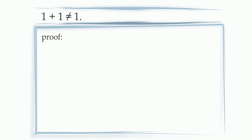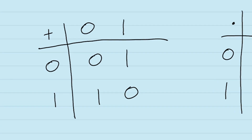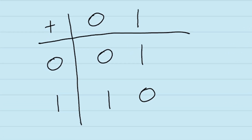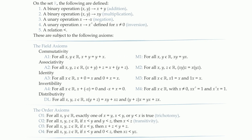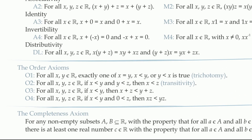First, we're going to prove that 1 plus 1 is not 1. This is fairly easy to do. And second, we're going to prove that 1 plus 1 is not 0. This one is a little bit more difficult because, as we've seen, it is very possible to have a number system satisfying all of the field axioms in which 1 plus 1 is equal to 0. And so to prove that 1 plus 1 is not equal to 0 for the real number system, we're going to have to look beyond the field axioms and include some of the order axioms in our proof.